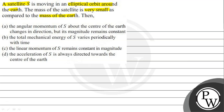Option A: the angular momentum of S about the center of the earth changes in direction but magnitude remains constant. Option B: the total mechanical energy of S varies periodically with time. Option C: the linear momentum of S remains constant in magnitude. Option D: